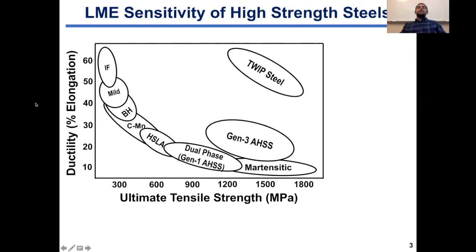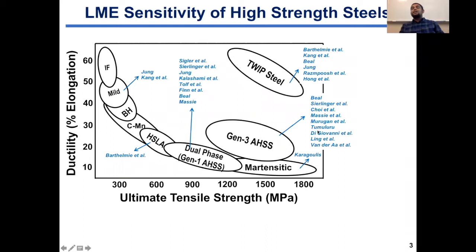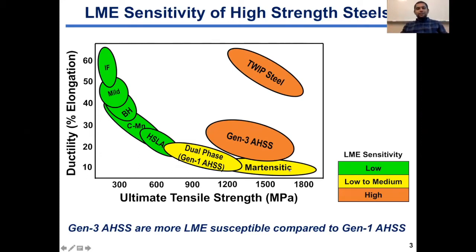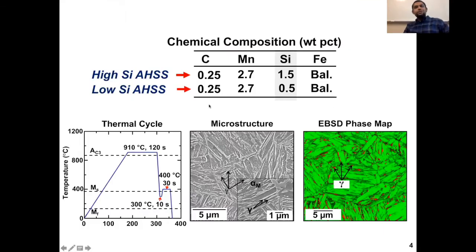Here is the strength-ductility banana diagram showing the different families of steels, and here are the various researchers that investigated the LME susceptibility of these different steels. One clear outcome of all these previous researchers has been that the recent generations of advanced high-strength steels are more LME susceptible compared to the previous generations of steels. These recent generations are more heavily alloyed, and in this presentation I'll show you how particularly silicon alloying can influence LME susceptibility.